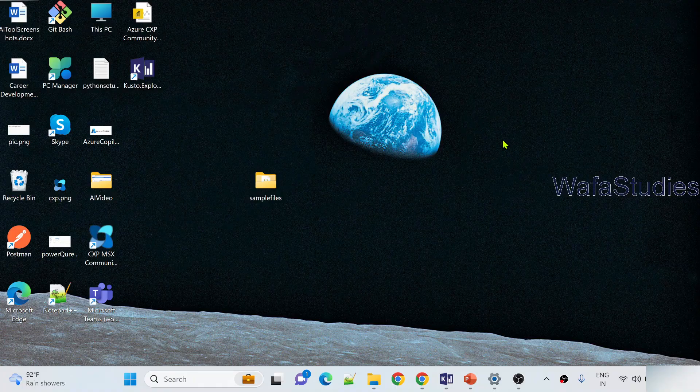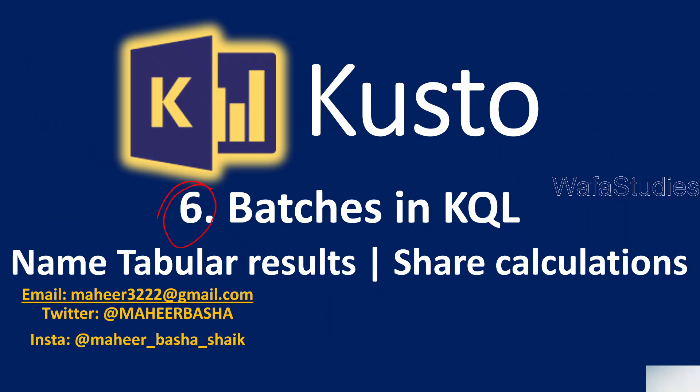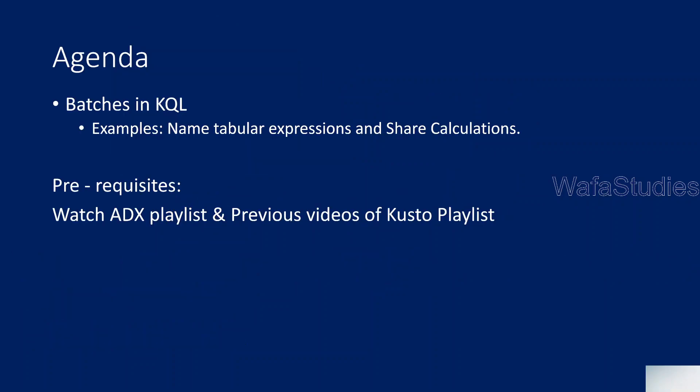Hi friends, welcome to Ofastity's YouTube channel. This is part 6 in the Kusto Query Language playlist. In this video, I will be explaining about batches in KQL. Batches means running multiple table expression statements in a single query. I will practically explain with examples where you can make sense of it.